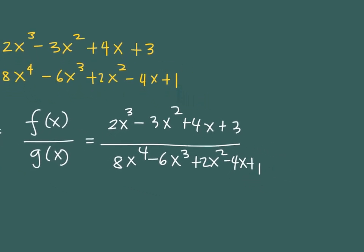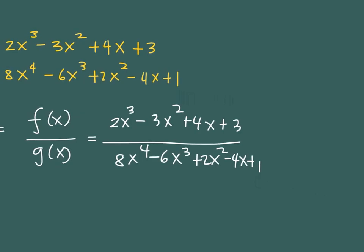As we know from the symbol, this means f of x over g of x — that is simply the numerator expression over the denominator expression for g. There is nothing much we can do to simplify unless we really put in effort to factor these two expressions, which is not practical. In an exam or test, we could leave the answer in this form. That's the basic idea of division.